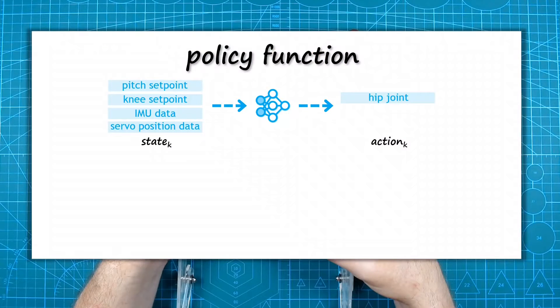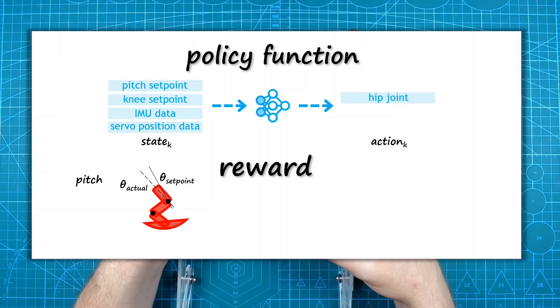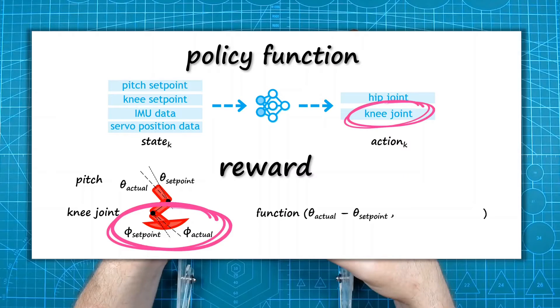So what are the updates for this video? Well, previously, the policy controlled only the hip joint for balancing. And in the reward, the difference between the actual pitch angle and the setpoint angle was used. Now, the policy has been updated so that it also estimates the required knee joint position. Therefore, in the reward, we can also include the knee joint setpoint and actual values and use this to help drive the training.